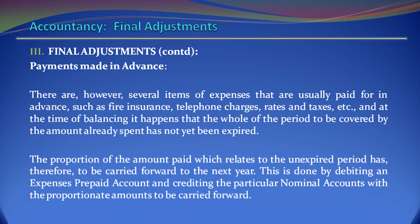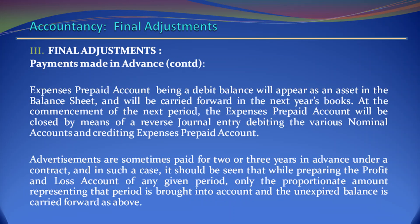Payments Made in Advance. There are, however, several items of expenses that are usually paid in advance, such as fire insurance, telephone charges, rates and taxes, etc., and at the time of balancing, it happens that the whole of the period to be covered by the amount already spent has not yet expired. The proportion of the amount paid which relates to the unexpired period has, therefore, to be carried forward to the next year. This is done by debiting an expense prepaid account and crediting the particular nominal accounts with the proportionate amounts to be carried forward. The expenses prepaid account will appear as an asset in the balance sheet and will be carried forward in the next year's books. At the commencement of the next period, the expenses prepaid account will be closed by means of a reversal journal entry debiting the various nominal accounts and crediting the expenses prepaid account.